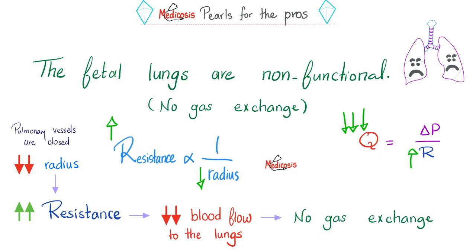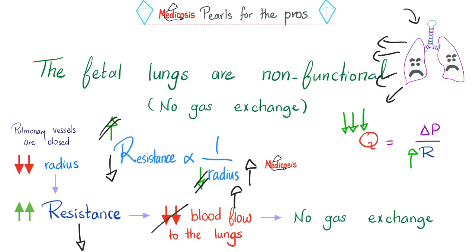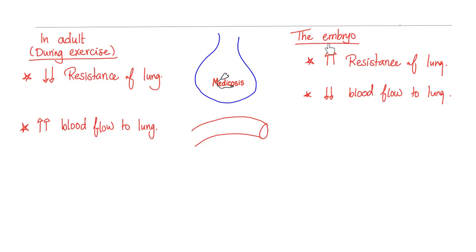But once the baby is born, the baby breathes in for the first time — the lungs expand, the radius increases, resistance decreases, and blood flow to the lungs increases. Suddenly the lungs are converted from a non-functioning piece of garbage into beautiful functioning alveoli, and the baby will start to cry — a very good sign and part of the APGAR score. Adults during exercise are the exact opposite of the embryo: when exercising, lung resistance is very low because all capillaries open, increasing radius, decreasing resistance, and increasing blood flow for more gas exchange.